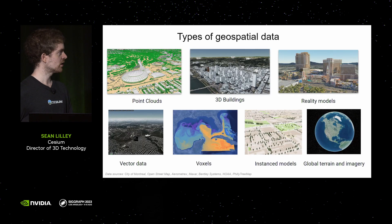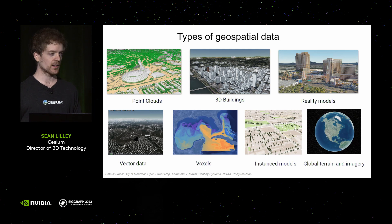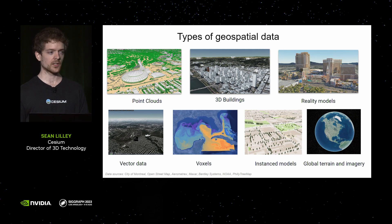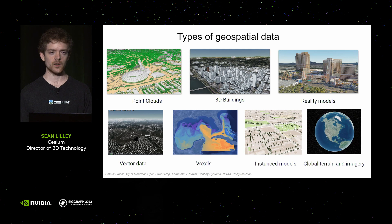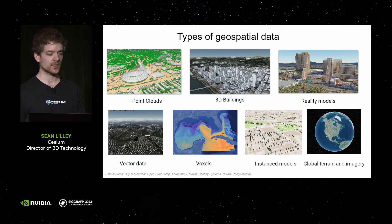When I talk about geospatial data, there are a few different forms. First, we have point clouds, which are typically captured by LIDAR scanners at very high resolution. Individual points may have color, intensity, classification, and other attributes. Here, this point cloud is being styled based on classification.